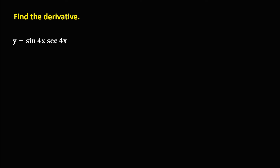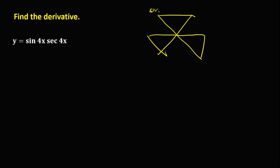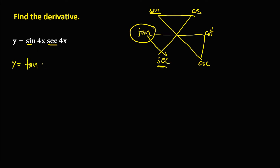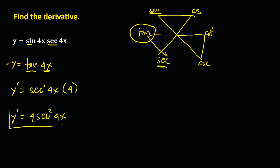For the next given, y equals sine 4x times secant 4x. Using the trig function figure — sine, cosine, tangent, cotangent, secant, cosecant — multiplying two functions gives the middle function. So sine times secant equals tangent. Therefore this given equals tangent 4x. The derivative of tangent is secant squared, times the derivative of 4x which is 4. So y prime equals 4 secant squared 4x.